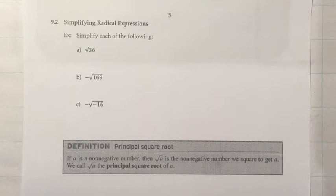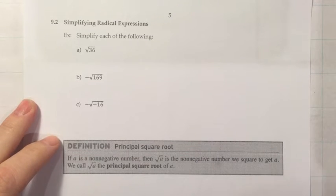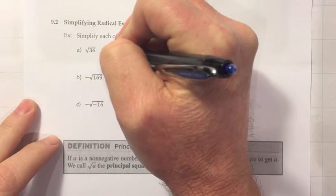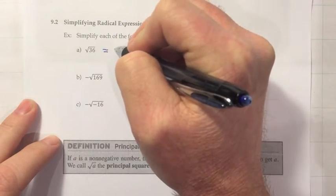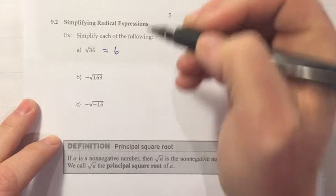Hey, section 9.2, Simplifying Radical Expressions. Let's simplify each of the following. So when we see this radical symbol written around the 36, that means to think of a number that when multiplied with itself would give you 36. And one answer to that would be 6.